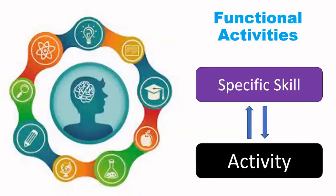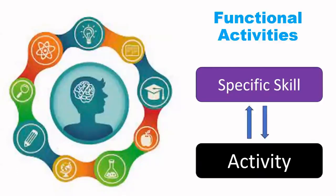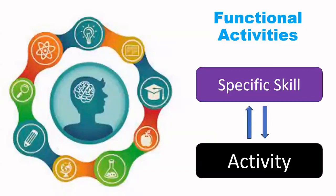If there is an interaction between the specific skill we try to build in children and the activities we do for that purpose, then that can be called a functional activity. If we do activities without understanding what kind of skill is going to be achieved, then those activities simply cannot be called functional activities — they will simply be generic activities, because after the activities are over we do not know whether the child has achieved a particular skill or not.